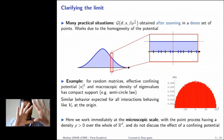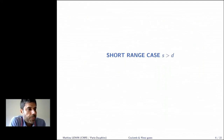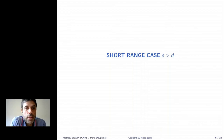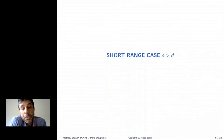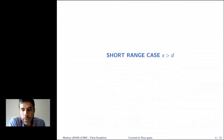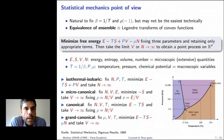I will start by describing what's known in the short-range case s > d, which is what statistical mechanicians have studied since the 1960s. This may not be in the background of most people working in random matrices. I think it's very useful to know what happens at large s, because we expect essentially the same — or almost the same — to happen at smaller values of s, except that it's much more complicated to prove.